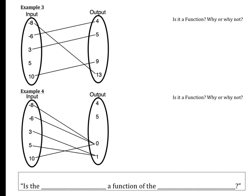Let's quickly look at one more example showing the other way we might not have a function. Eight has an output, negative six has an output, three has an output, ten has an output, but five goes nowhere. So this would be no — this breaks our first condition. No, because the value five has no output.